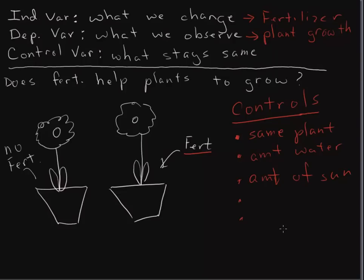So I think you get the idea. Again, independent variable, the things that we change. Dependent variable, what we observe. And control variable, all the things in the experiment that need to remain the same. I'll try to put up one more video to help you understand further with maybe another example or two.